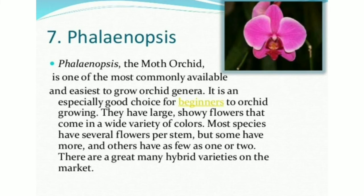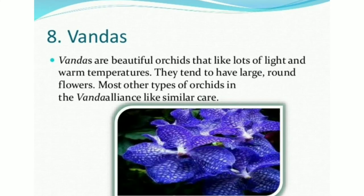There are a great many hybrid varieties of Phalaenopsis on the market. Vandas are beautiful orchids that like lots of light and warm temperatures. They tend to have large round flowers. Most other types of orchids in the Vanda Alliance like similar care.